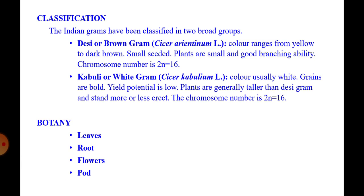Indian grams have been classified into two broad groups. First is Deshi or Brown Gram (Cicer arientino) and second is Kabuli or White Gram (Cicer cabulium). The name itself distinguishes the two: Deshi or Brown Gram is brown in color while Kabuli or White Gram has a white color. In Deshi or Brown Gram, seed color ranges from yellow to dark brown and seeds are usually small compared to Kabuli gram.